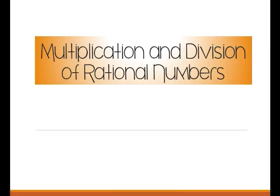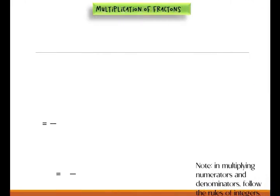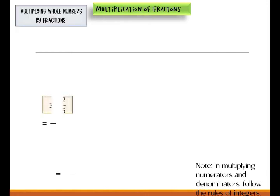For our topic we have multiplication and division of rational numbers. Let's start with multiplication of fractions. First we will multiply whole numbers by fractions — example: 3 times 2 over 5.